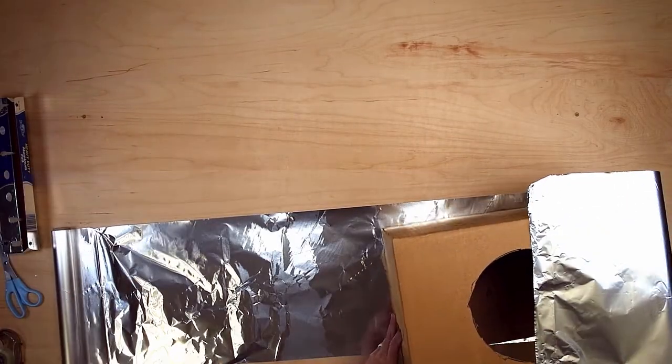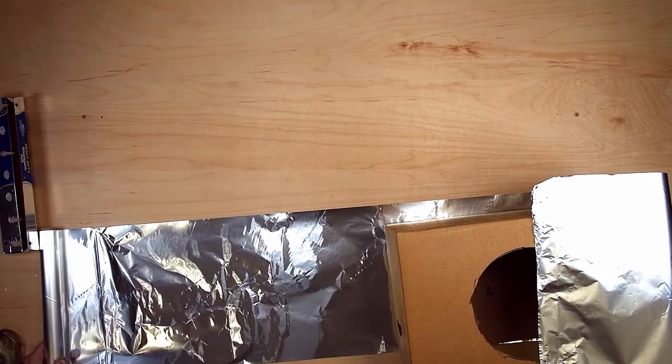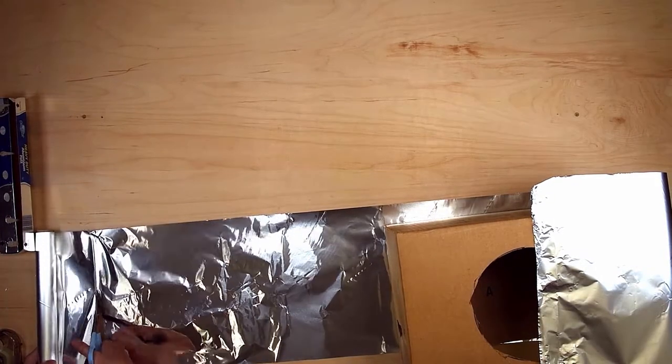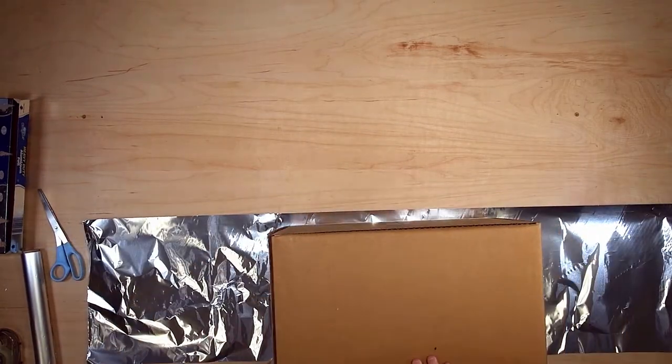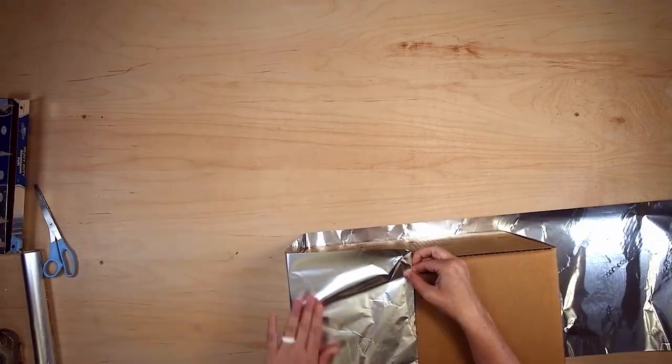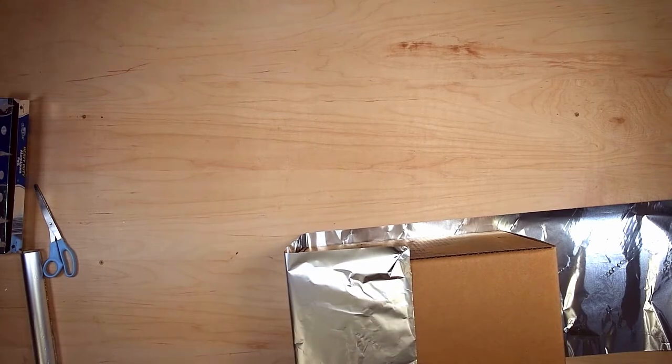Notice I folded the tinfoil with the roll, so that I could create a crease and know where to cut it. Now I'm going to turn the box upside down so the circular hole for the face is centered in the tinfoil. I did this so that there's not a seam at the front of my Space Helmet.